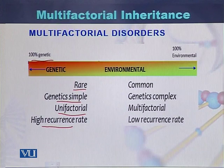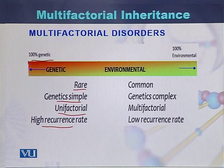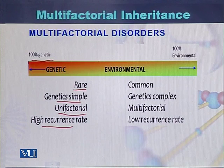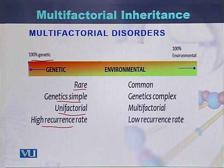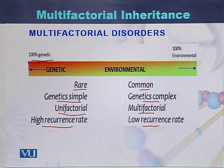On the other hand, multifactorial diseases are those in which more than two genes are involved, or there is an interaction between the genes and the environment. These diseases are common in nature, their genetics is complex, they are called multifactorial, and they have a low recurrence rate.